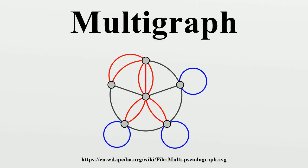A mixed multigraph G may be defined in the same way as a mixed graph. Directed multigraph: a multigraph or quiver G is an ordered four-tuple G, equals with V, a set of vertices or nodes; A, a set of edges or lines; assigning to each edge its source node; and assigning to each edge its target node.